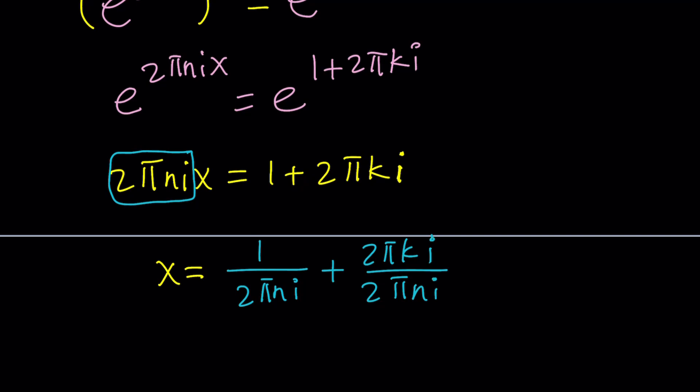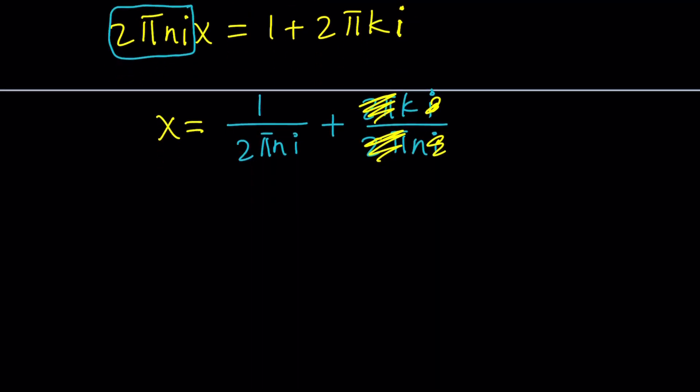On the right-hand side, we get a lot of simplifications because 2 pi is going to cancel out, i is going to cancel out. x equals, now here, you want to put the i in the numerator, so let's multiply by negative i. Some people will multiply by i, and then they'll have to negate it, but I directly multiply by negative i. That gives me negative i divided by, now, i times negative i is negative i squared, which is positive 1. So it's going to give me 2 pi n at the bottom, which is nice. Plus k over n. k and n are integers. Obviously, n should not be 0.